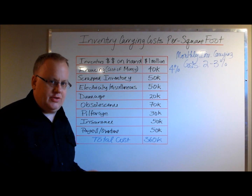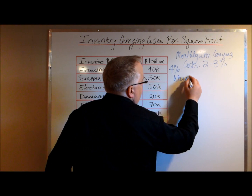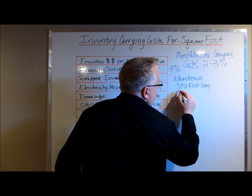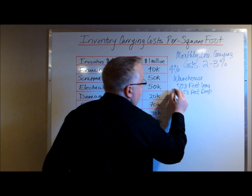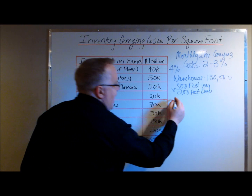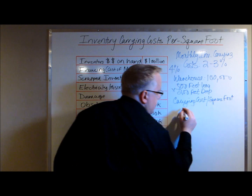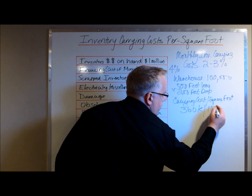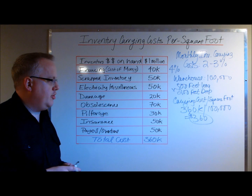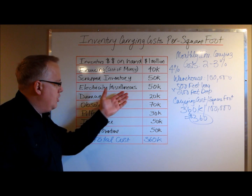So how do you turn this into a carrying cost per square foot? In our example, the company's warehouse is five hundred feet long by two hundred feet deep. Five hundred times two hundred means their warehouse is one hundred thousand square feet. Their carrying cost per square foot is three hundred and sixty thousand dollars divided by one hundred thousand square feet, which equals three dollars and sixty cents for every single square foot in their warehouse.